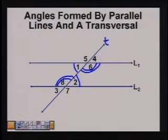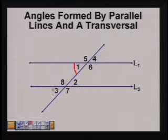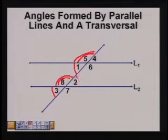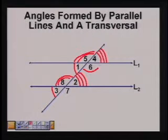The second type are called corresponding angles. Corresponding angles are angles that lie in the same position on the lines. Angles 1 and angle 3 are corresponding angles. There are several other sets of corresponding angles, including angles 8 and 5, and angles 2 and 4. If you said 6 and 7, you're correct.